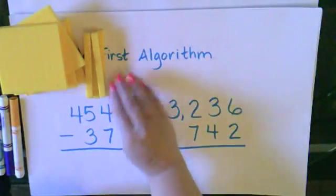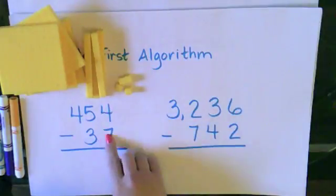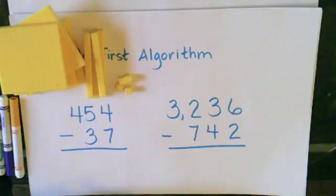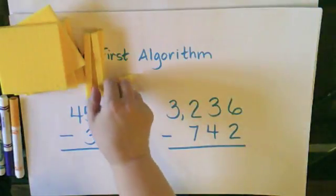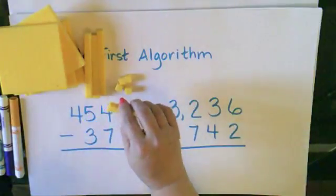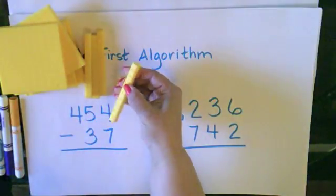I can see that if I only have 4 1s and I want to take away 7 1s, I can't do it. So this is when we need to use our trade-first algorithm. I need to take one of my 10s and break it apart.